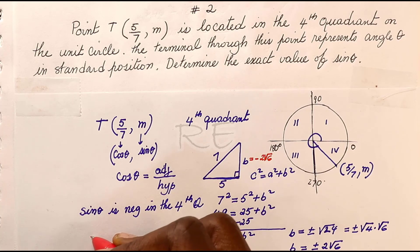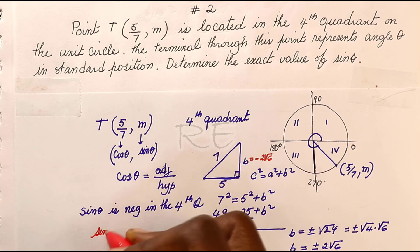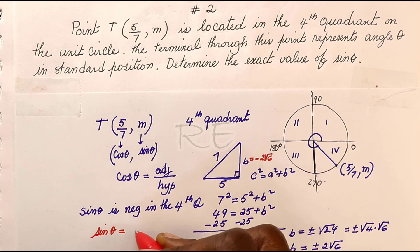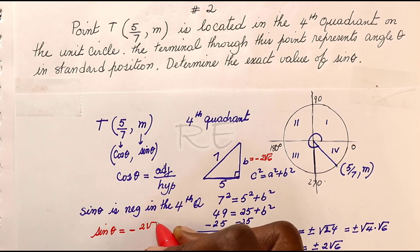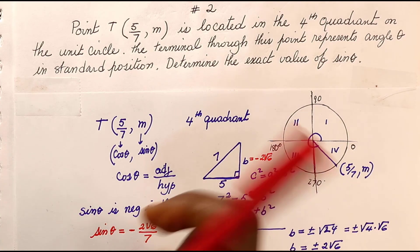Now, sine theta exact value: sine theta is negative 2 square root of 6 divided by the hypotenuse, which is 7.